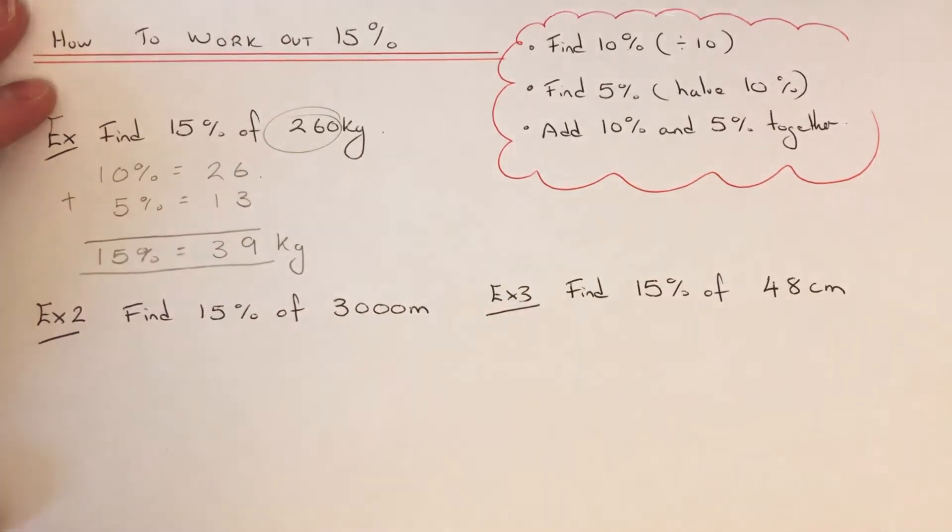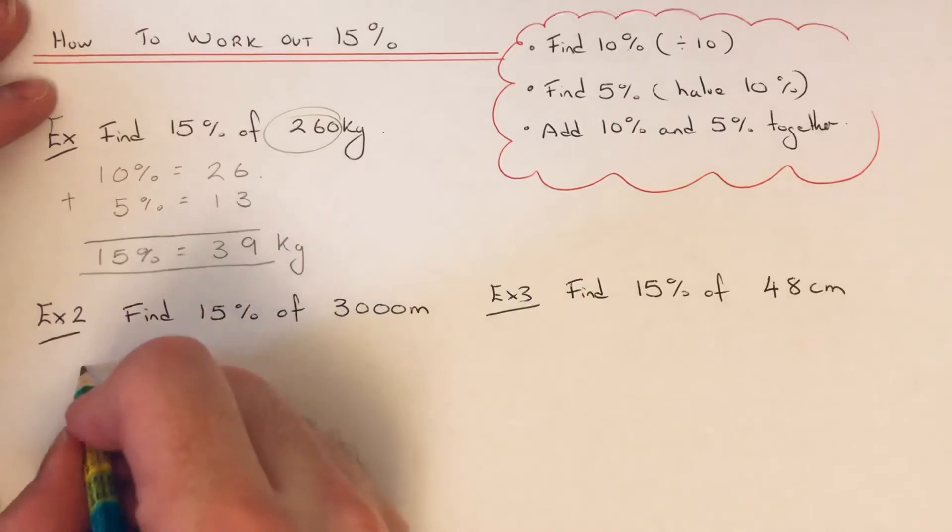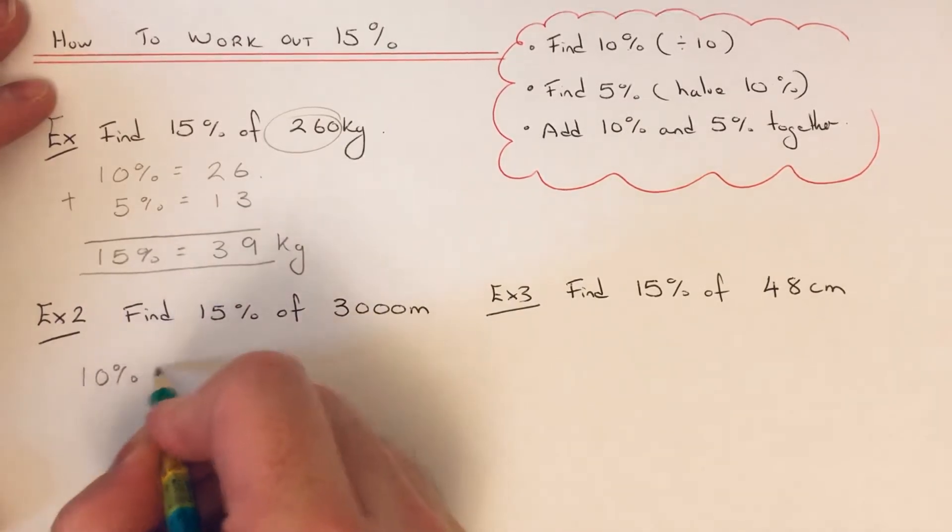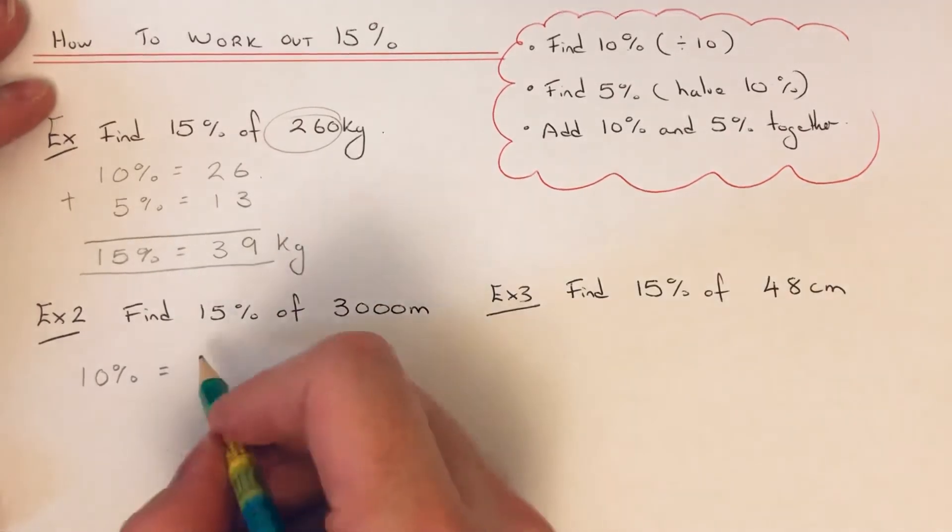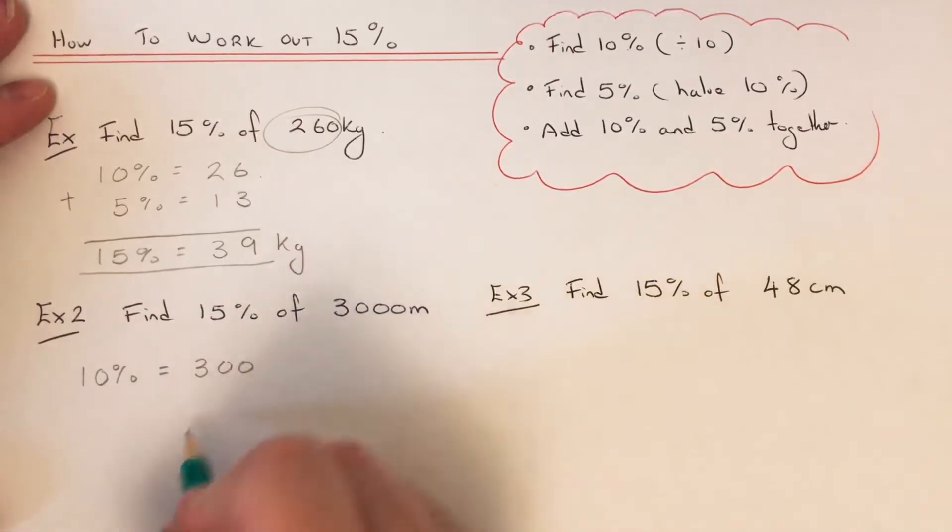This time we need to work out 15% of 3000. Again, start off with 10%. We need to do 3000 divided by 10, which is 300 – just take a zero off. Then do 5%, so we need to